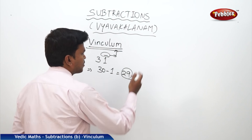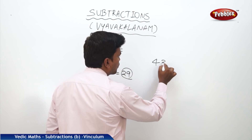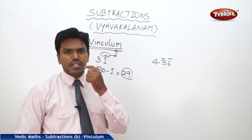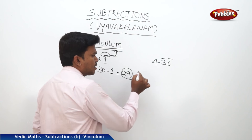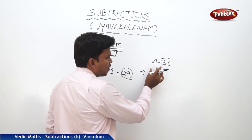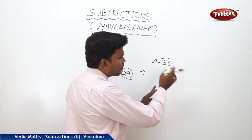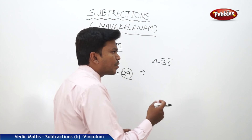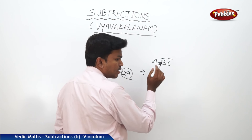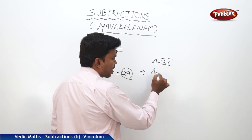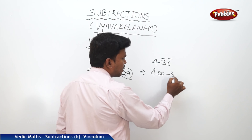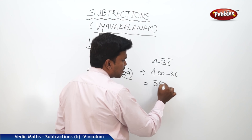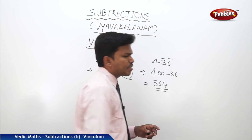Let's take one more example: 4, 3 bar, 6 bar. What does this mean? I want to convert this vinculum number into the normal number. Just like before: 400 minus 36. So what is 400 minus 36? That is 364. So the answer is 364.